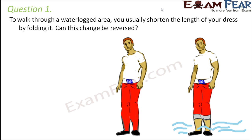Question number 1: To walk through a waterlogged area, you usually shorten the length of your dress by folding it. Can this change be reversed? Let's say you are wearing full pants and you suddenly enter an area where there is a lot of water. Your pants will unnecessarily become dirty and wet, so you just fold your pants and start walking through the water.